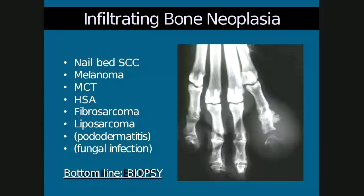Multiple types of neoplasia can affect the digits. Nail bed squamous cell carcinoma is probably the most common, but malignant melanoma, mast cell tumor, hemangiosarcoma, fibrosarcoma, liposarcoma, and osteosarcoma can also primarily affect the bone. Pododermatitis and fungal infection of the nail bed are differentials. Neoplasia tends to be more lytic, but both neoplasia and osteomyelitis can affect multiple toes. Bottom line for digital tumors is that a biopsy is needed.